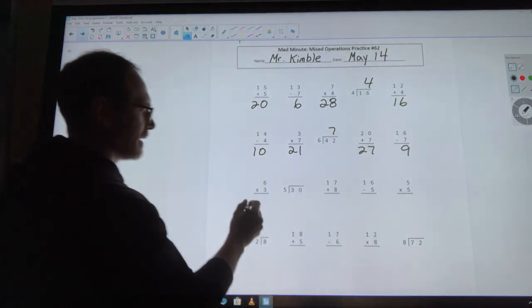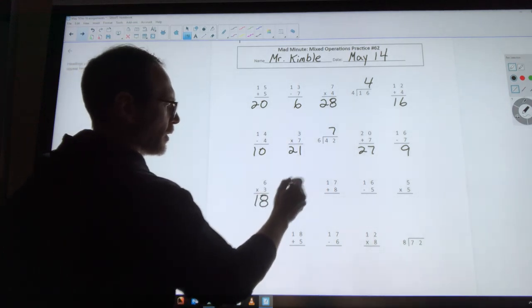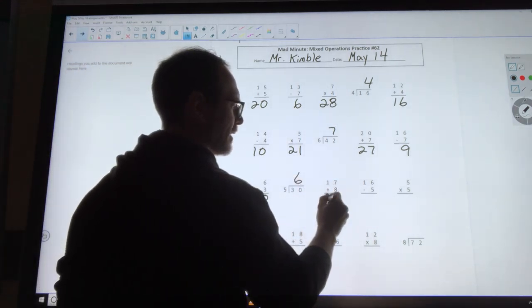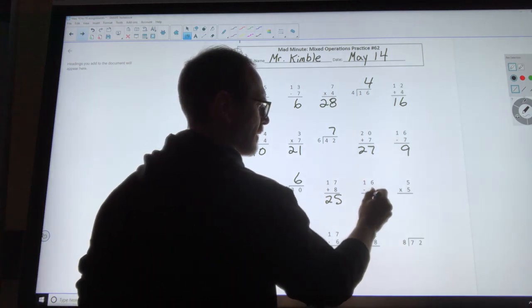20 plus 7 is 27. 16 minus 7 is 9. 6 times 3 is 18. 30 divided by 5 is 6. 17 plus 8 is 25.